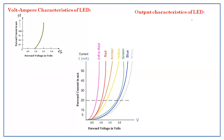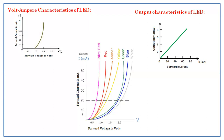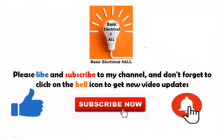If you see the output characteristics of the LED, the output light is based on the forward current. If the forward current increases, the output light also increases — both are in a linear relationship. The advantage of the light emitting diode is very low power wastage, which is why LEDs are very useful. In the next class, we will discuss more topics.